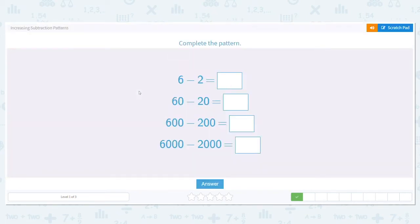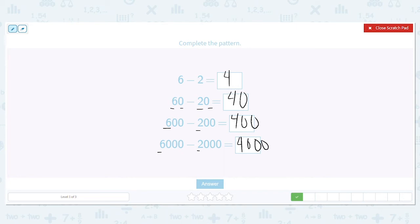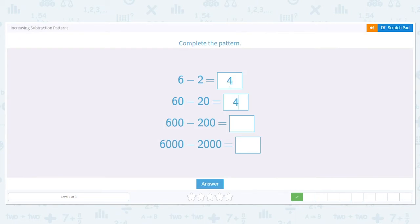Let's do another one. 6 minus 2, 60 minus 20, 600 minus 200, 6,000 minus 2,000. I don't have the fancy addition way this time, but that's okay. We don't need it for this. What is 6 minus 2? 6 minus 2 is 4. If you can answer the first couple, you will have no problem figuring out the rest of the pattern and filling it in.